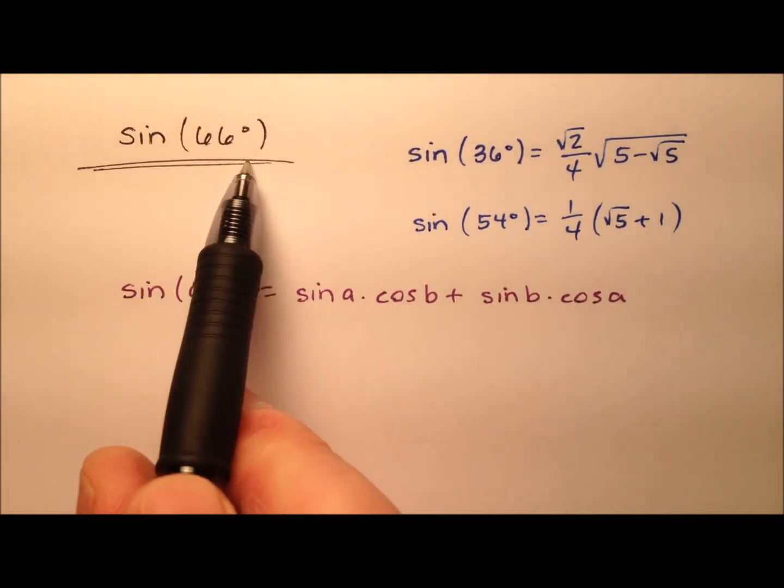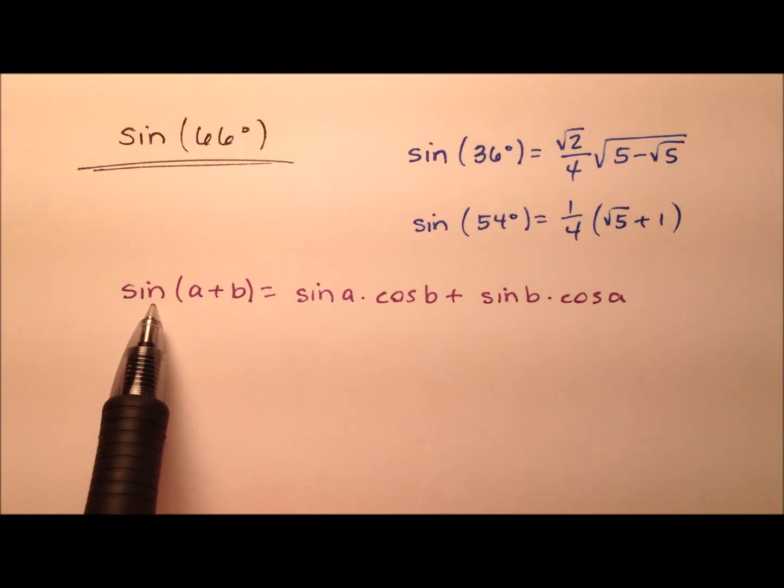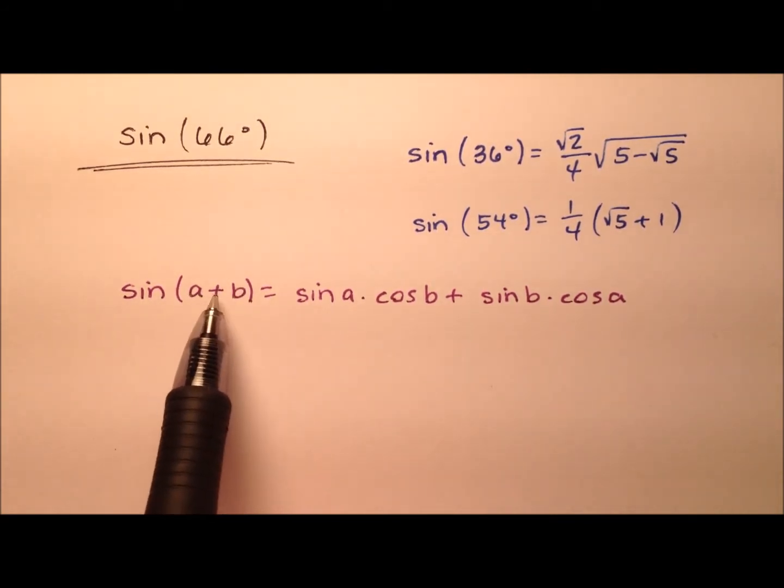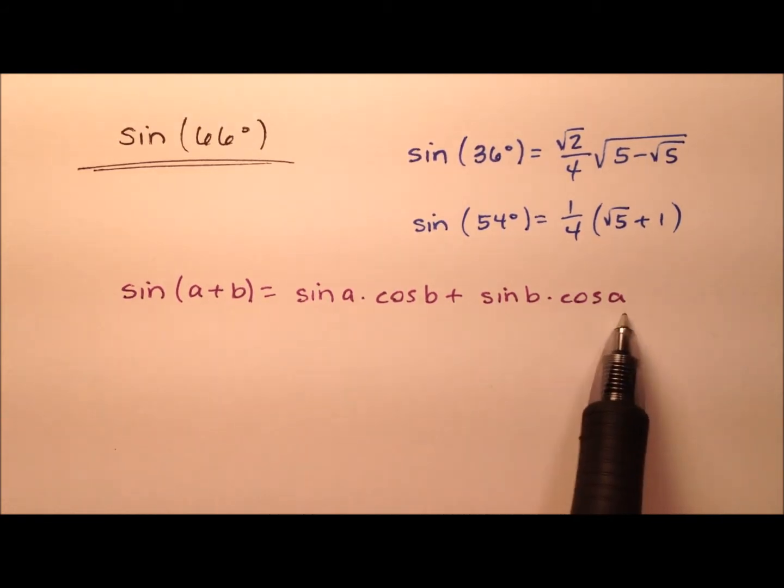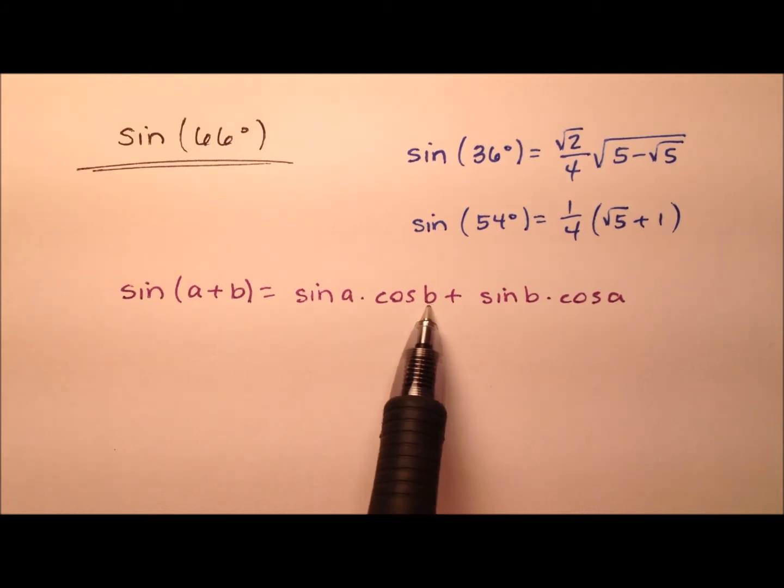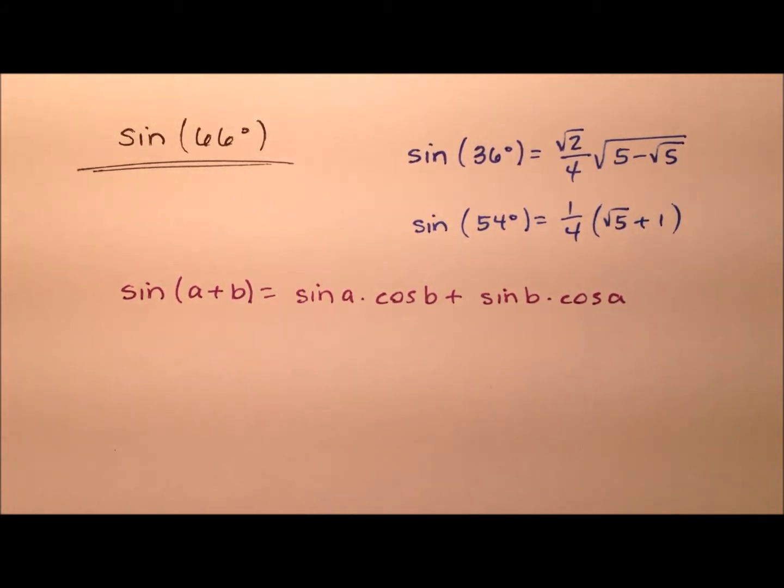We're going to find the sine of 66 degrees by using the sum identity for sine, which says that the sine of two angles, a and b, when I add them, it will have this expansion: the sine of a, which is that first angle, times the cosine of b, which is the second angle, plus the sine of b times the cosine of a.